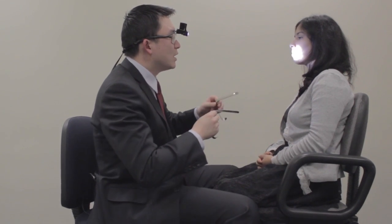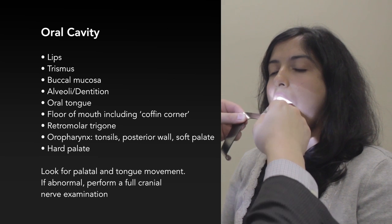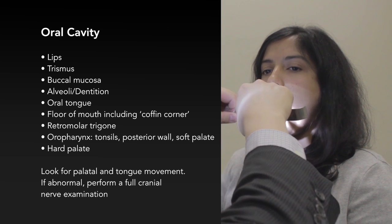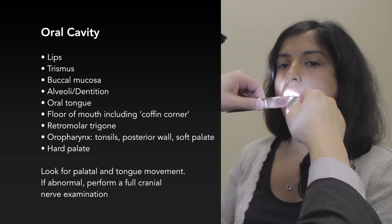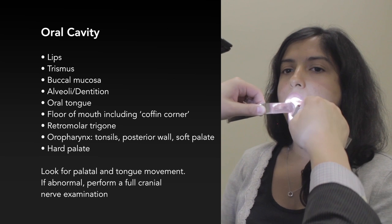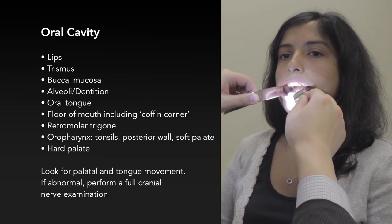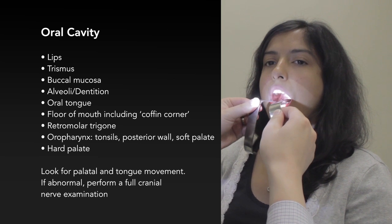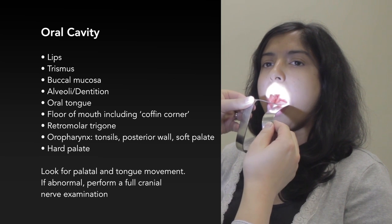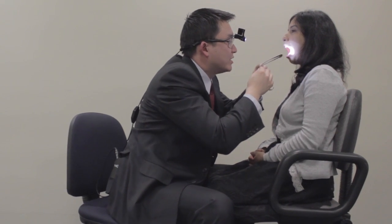Start with the mouth closed — inspect the lips and general facial symmetry. Have a tongue depressor in both hands and your headlight on. Ask the patient to remove any dentures. Inspect all subsites in a logical order, then palpate with a gloved hand. The lip is normal. Open your mouth as wide as it can go. Stick out your tongue and move it left and right — there is no restriction on tongue movement. The buccal mucosa is normal. The sulci are normal. The floor of mouth is normal. The oropharynx, soft palate, and hard palate are all normal. I like to palpate these subsites with a gloved finger.